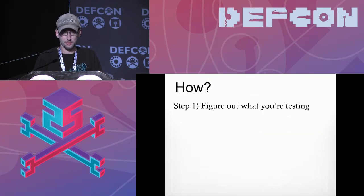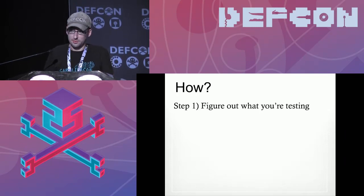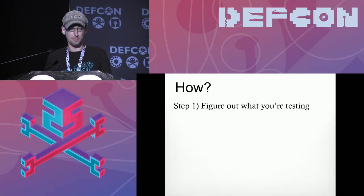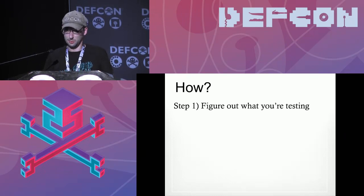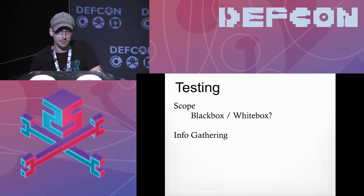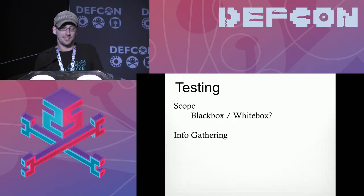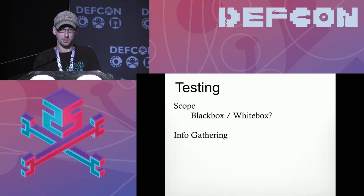When somebody says they want to test their phone system, the first thing is figuring out what you're testing — because a phone system could be anything. There's hardware, software, user agents, PBXs, soft phones, apps, protocols, codecs, and each requires its own specialized skill set. Once you've determined that, you decide on black box versus white box, determine scope, whether you're trying to be stealthy, avoid detection, or test your detection capabilities. You don't want to tread on systems you don't own — you may dial into something that turns out you don't own that product.